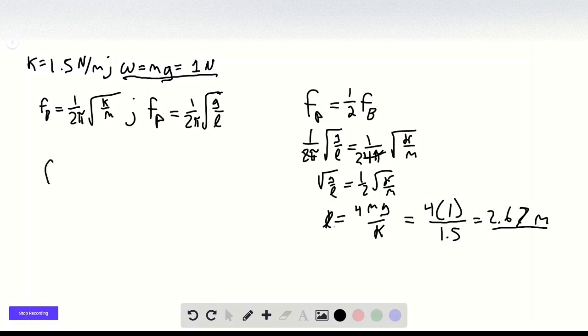So if we know that F equals KX, we want to figure out what X is from this 1 newton shift. So we know the force is 1, so 1 equals 1.5 times X.